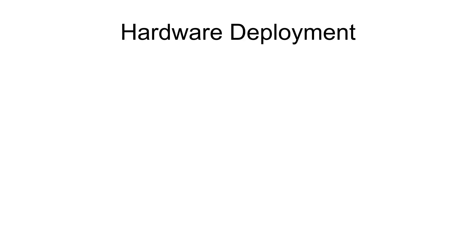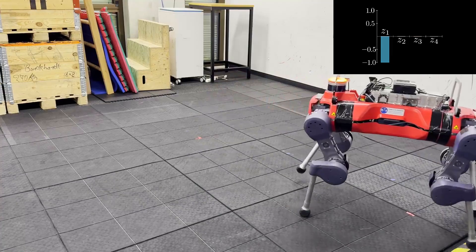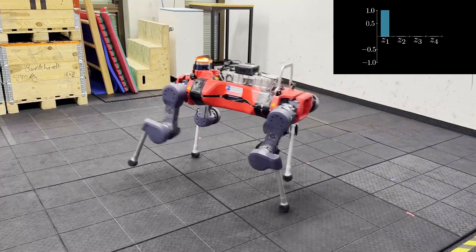The learned skills transfer zero-shot from simulation to the real robot. We can command it to walk using the base position factor.